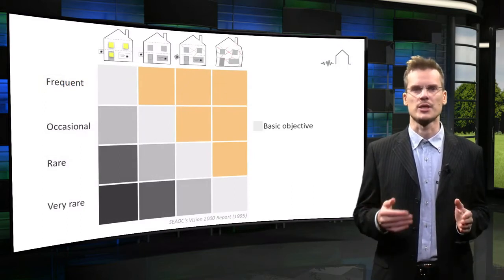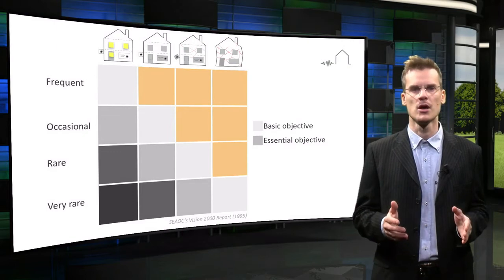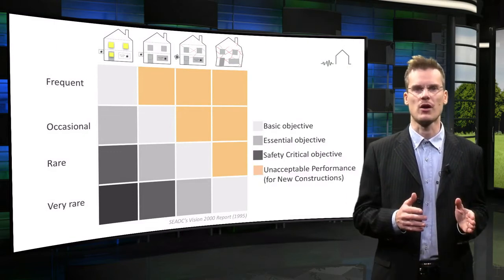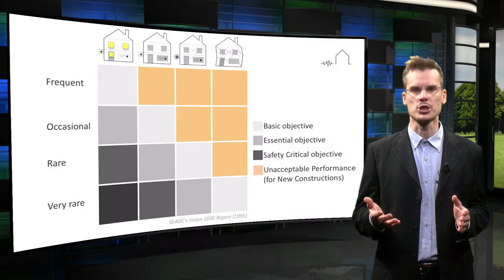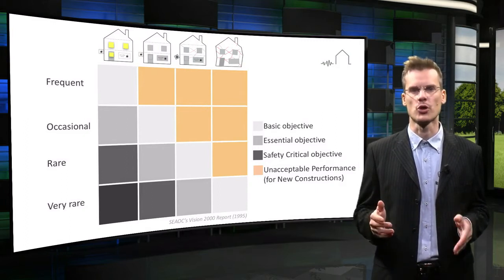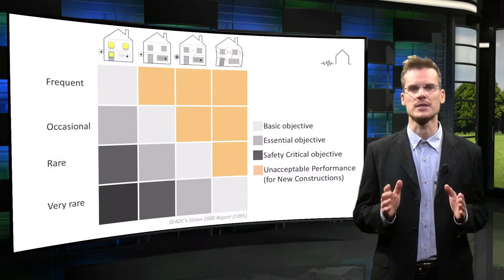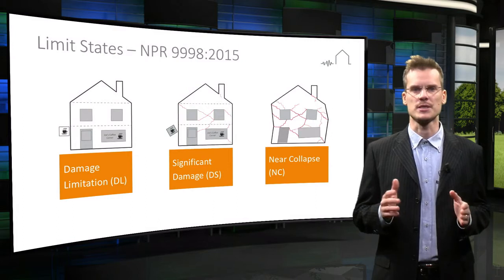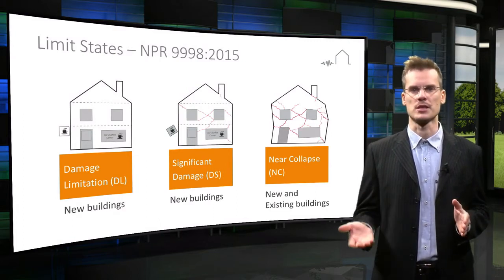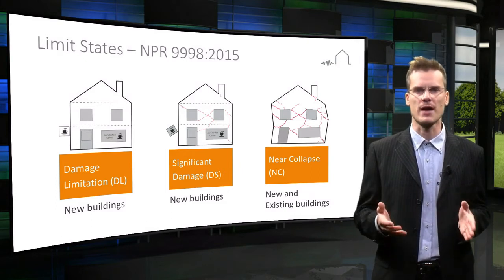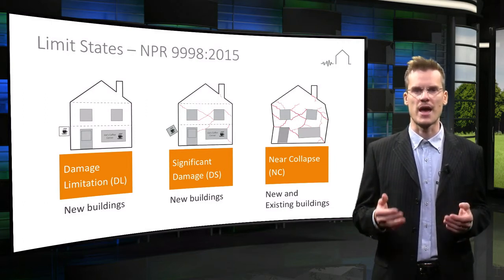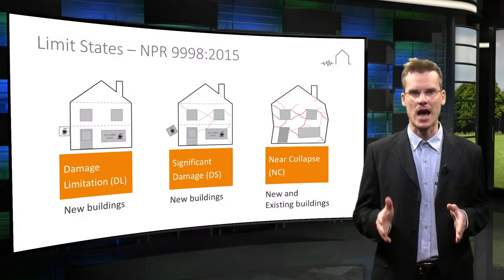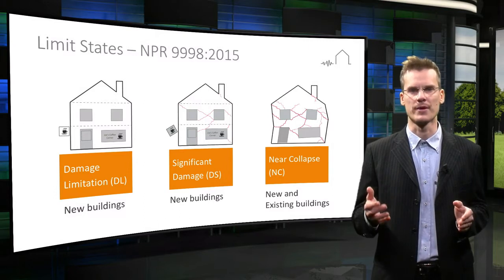A limit state is an acceptable risk of experiencing a specific damage level with associated losses for a specific level of seismic hazard. In simple words, for a specific building according to its typology and importance, we select a performance level on the horizontal axis and a hazard level on the vertical axis — combining them creates limit states. NPR has adopted three limit states for new buildings and one for existing buildings, each consisting of a performance level with an associated return period. Building codes indicate the minimum performance level required in accordance with the usage purpose of the building.